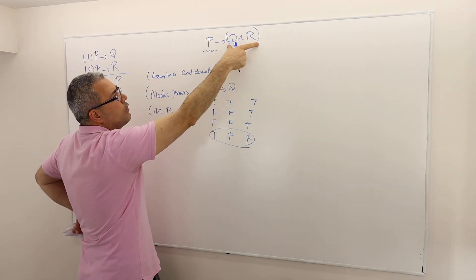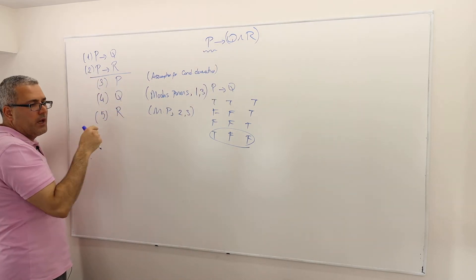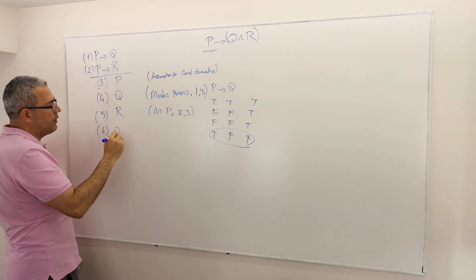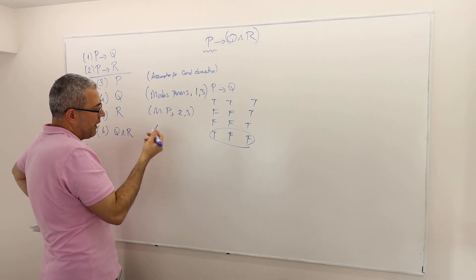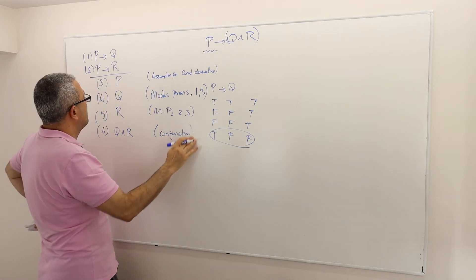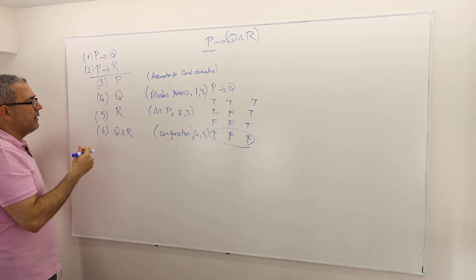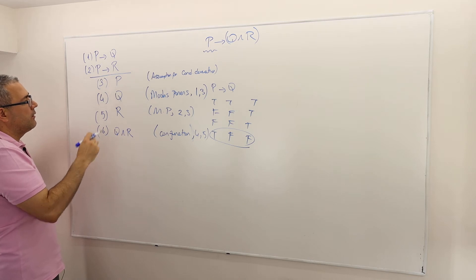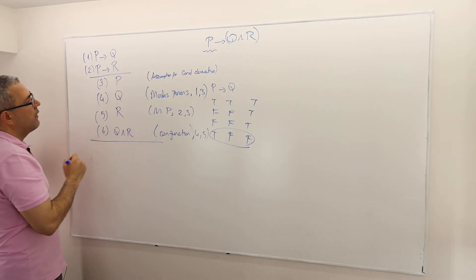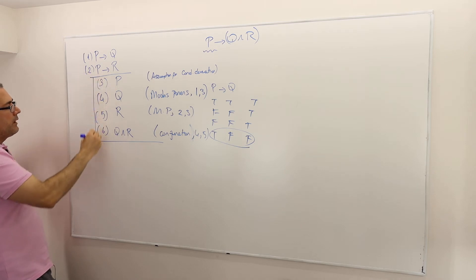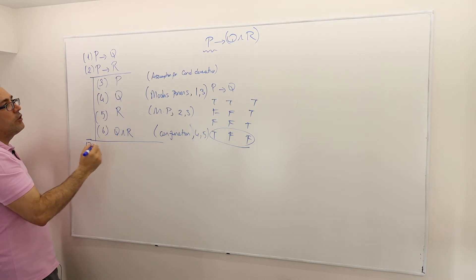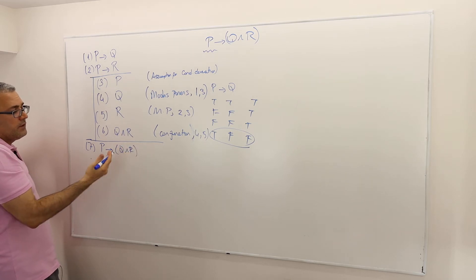I assumed P and want to show Q and R. Q is true, R is true, so Q and R must be true as well. So Q and R — this is conjunction of the arguments in lines four and five. I am connecting Q and R with 'and', so it must be true as well. I close this box because I assumed P and showed that Q and R is true, which means P implies Q and R is a true argument.